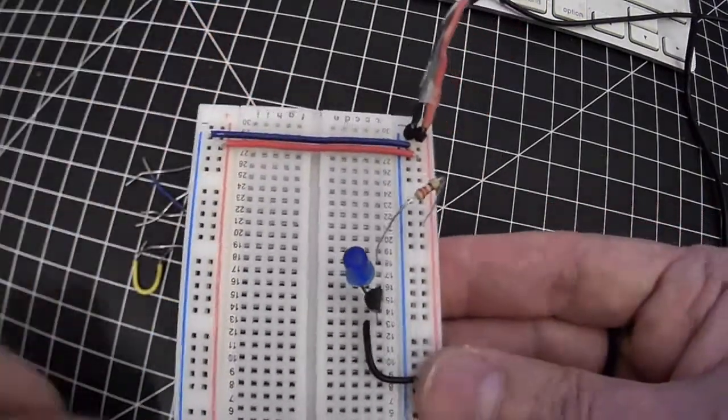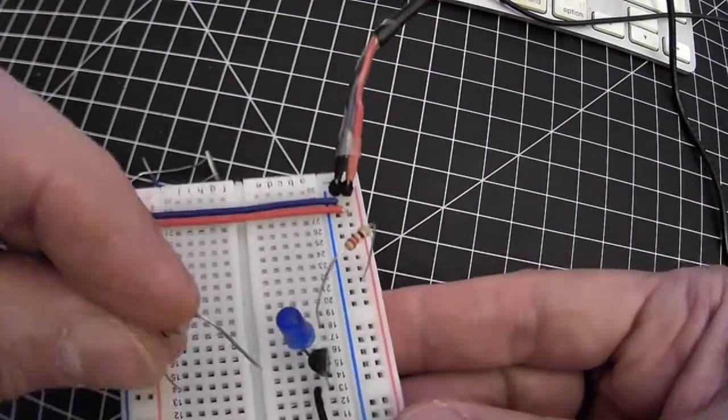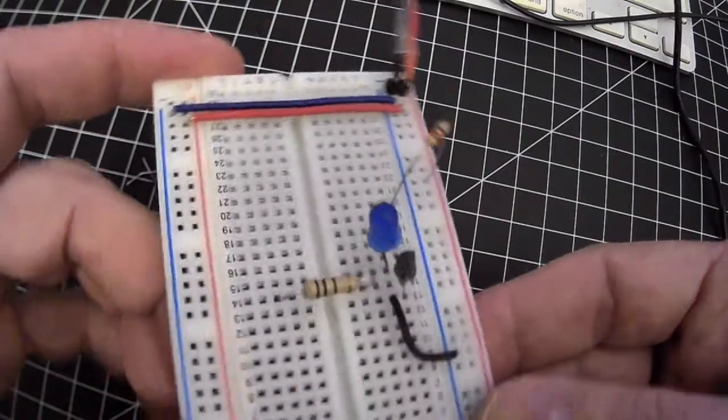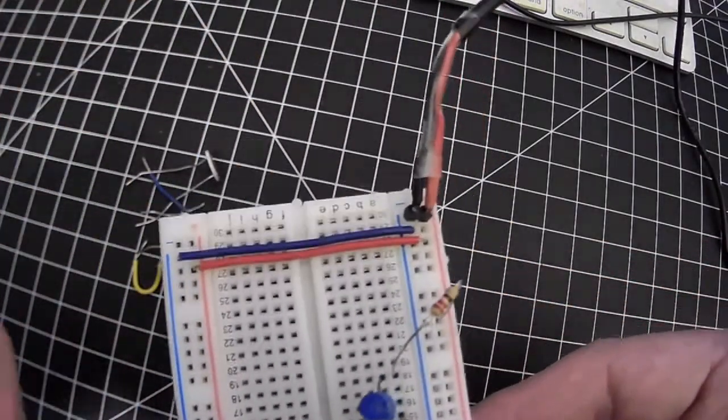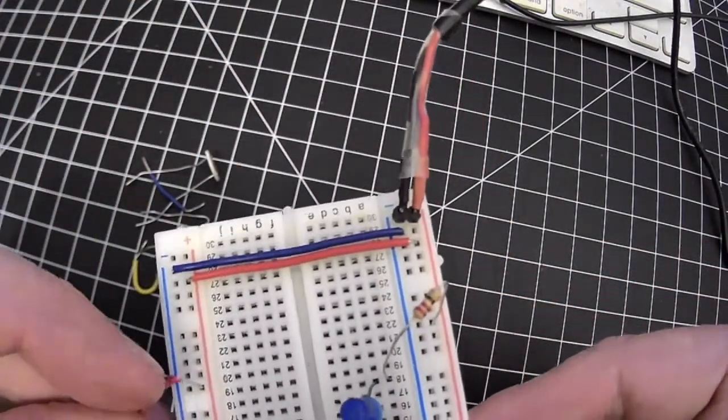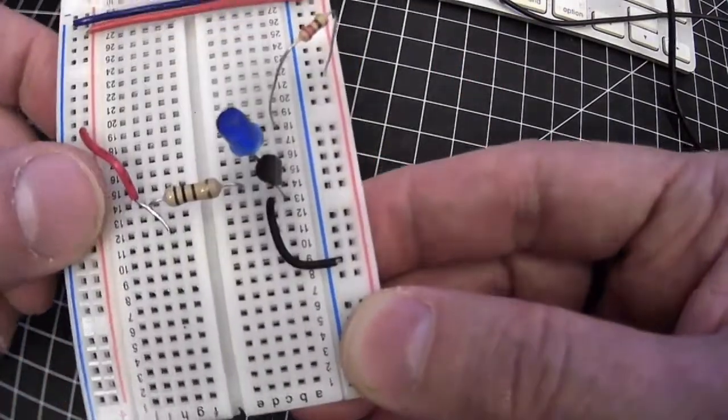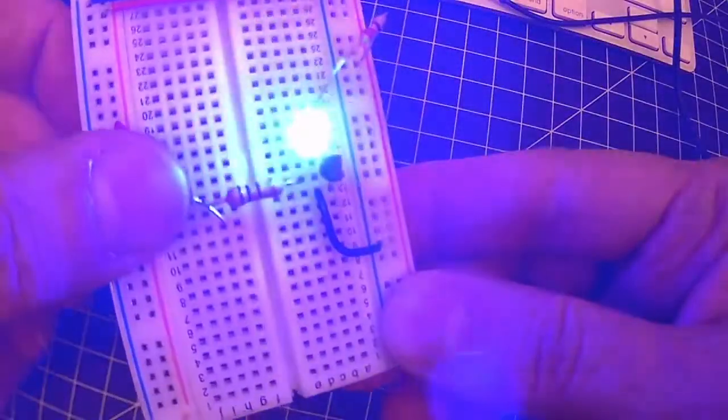So that's called base emitter current, and I'm putting in this 100 ohm resistor to just make sure that that current can't get too high because it can burn up the transistor. That's why the 100 ohm resistor is there to protect the transistor. If there's about 0.6 volts or more at the base, then that will cause the transistor to switch on.